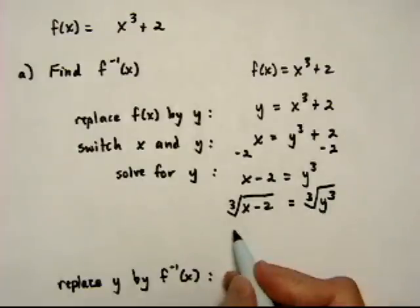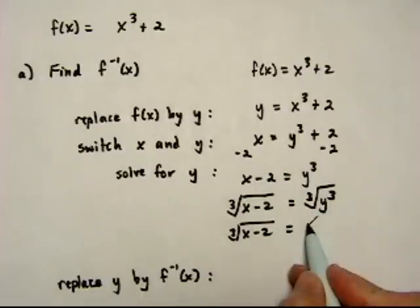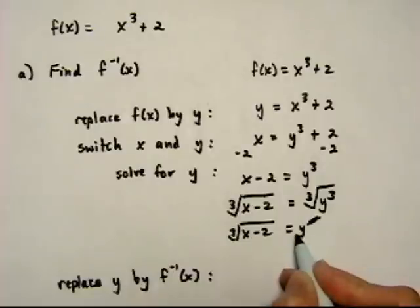So cube root of x minus 2 is equal to the cube root of y cubed. And that gives us cube root of x minus 2 is equal to, and the cube root undoes the cubing, and we get y. We get just the y out again.